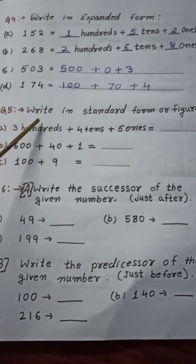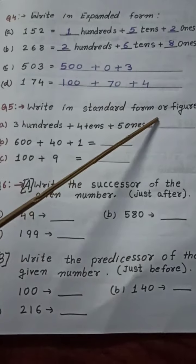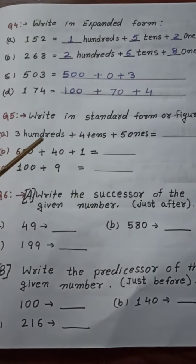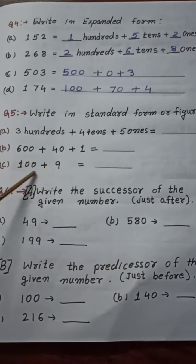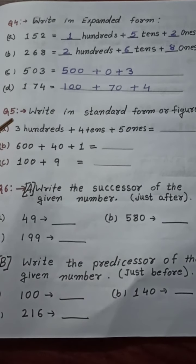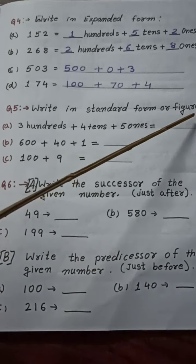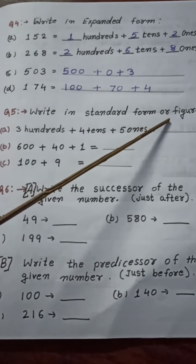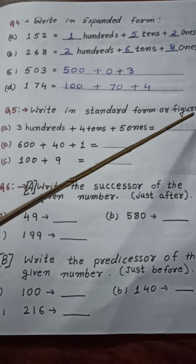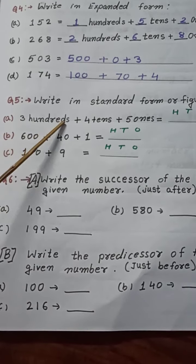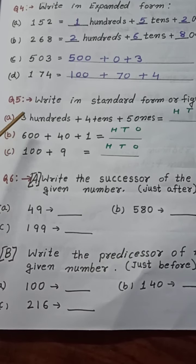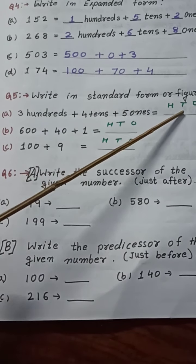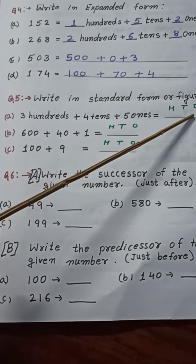Now question number 5: write in standard form or in figures. This question is just the reverse of question number 4 — here it is already written in expanded form and we have to write in figures. Before writing the figure, first we put a plus sign. Children, don't forget to put the plus sign — it will be easy for you when you write the answer. So first we write plus. 300: 3 we will write on the 100s place. Then 4 tens, so 4 we write here.